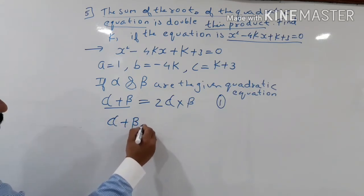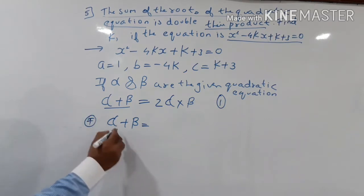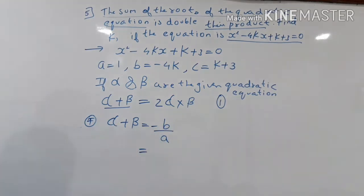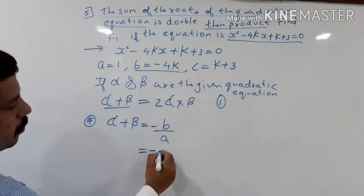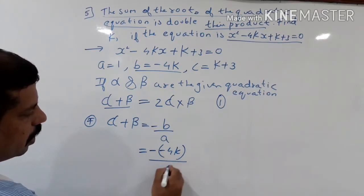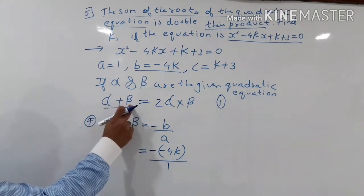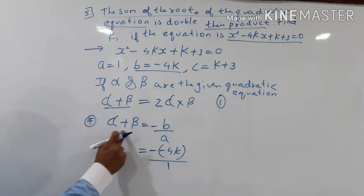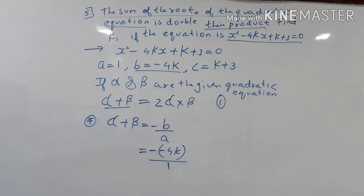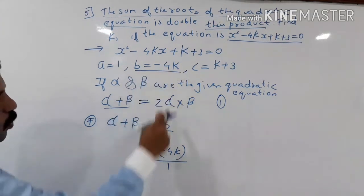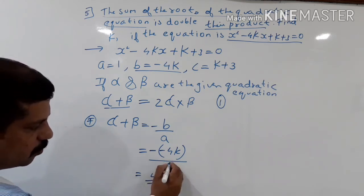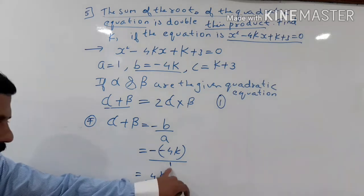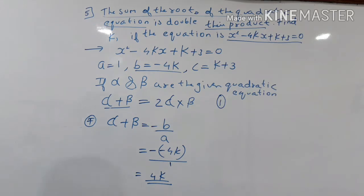Alpha plus beta is equal to minus b upon a. Substituting: minus sign as it is, b is minus 4k, so minus into minus gives plus. Therefore alpha plus beta equals 4k upon 1, which is 4k.